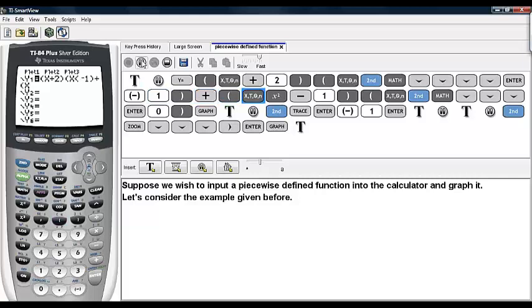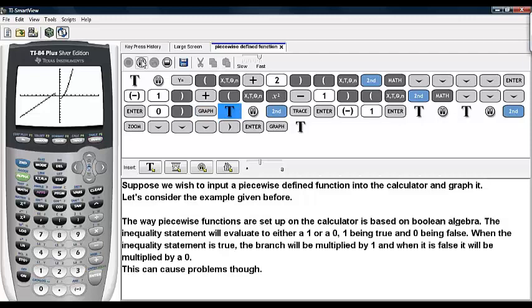Then we type in the next branch in its own set of parenthesis, x squared minus 1, and then type in its condition in its own set of parenthesis. In this case x is greater than or equal to 0. Now we'll go ahead and close that and hit graph. And here is the graph of your piecewise function.